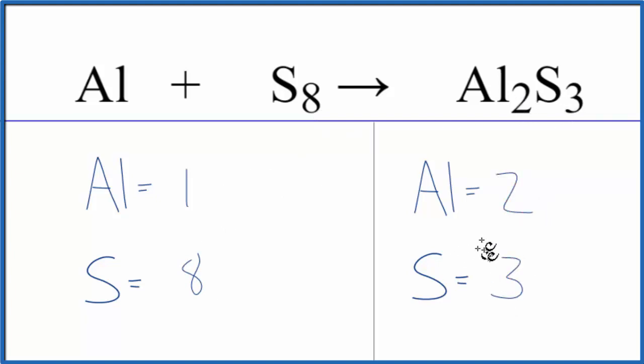And we're immediately met with this kind of problem here, a three and an eight. How do we deal with that? Let's leave the aluminums till last, because it's going to be easy to fix that. We'll just put something in front of the aluminum here, and that'll be fixed.